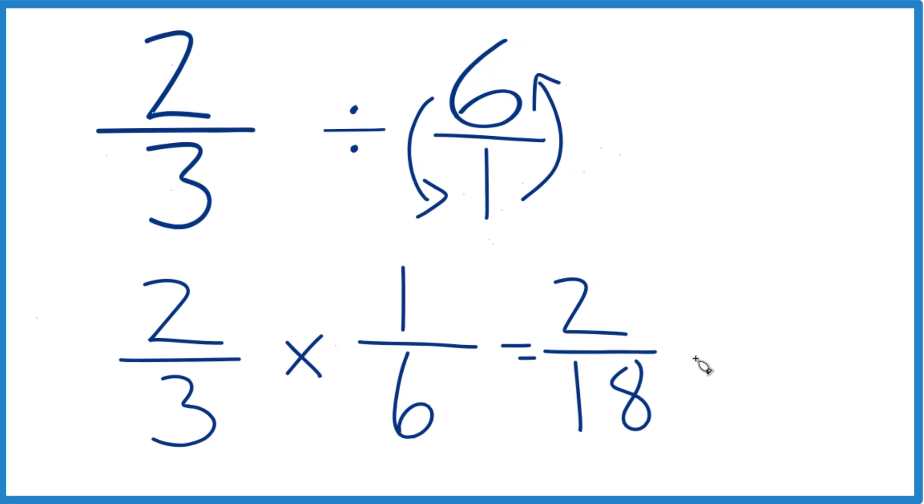These are both even numbers. Let's simplify it. Two divided by two is one. Eighteen divided by two is nine.